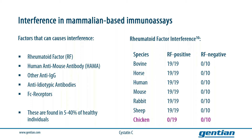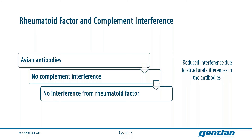On the right-hand side of this slide, you see results from a study by Larsson et al. in 1988, where interference from rheumatoid factor was demonstrated. In this study, 19 samples from patients with a positive test for rheumatoid factor were compared to 10 samples from patients that had tested negative. Interference was observed for all 19 positive samples when mammalian antibodies were used, but not for avian antibodies. No interference was seen in negative samples. The Gentian cystatin C assay is made from avian antibodies, ensuring that no complement interference from proteins like rheumatoid factor is present.